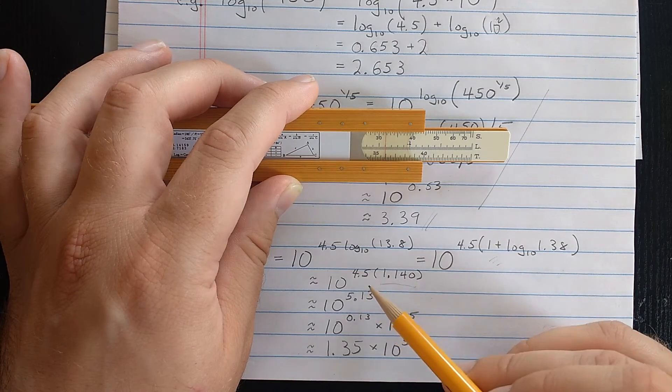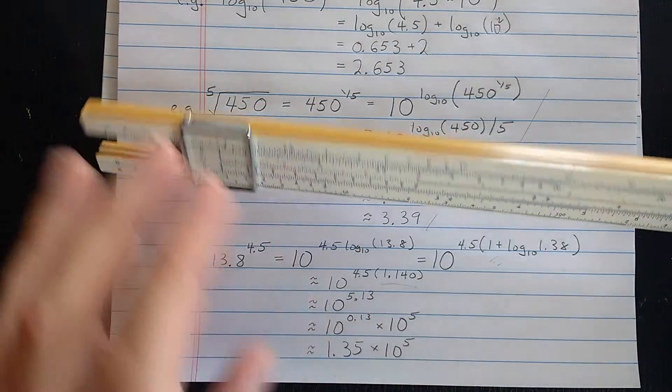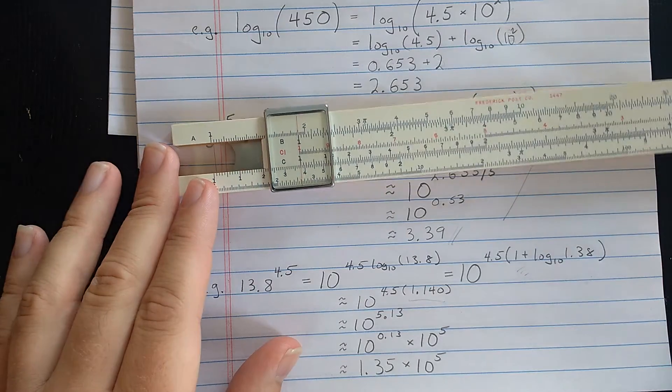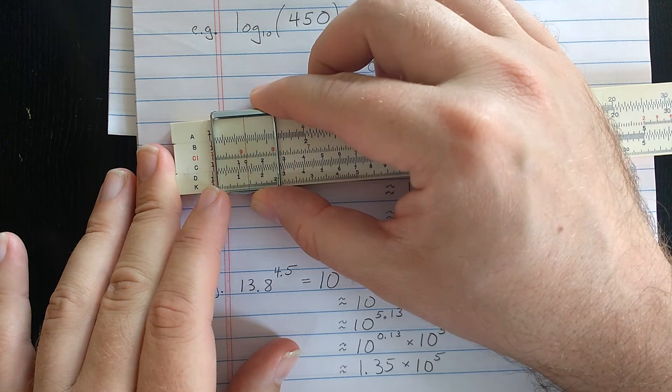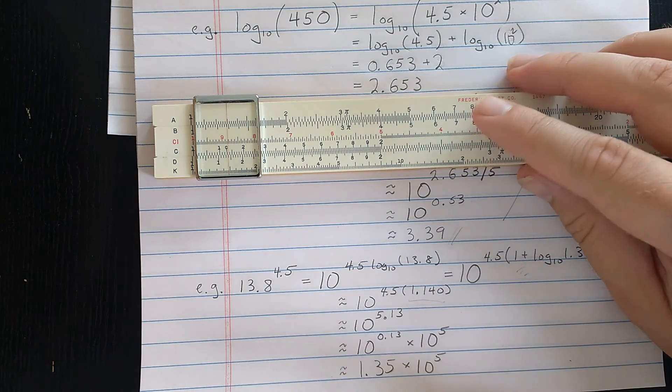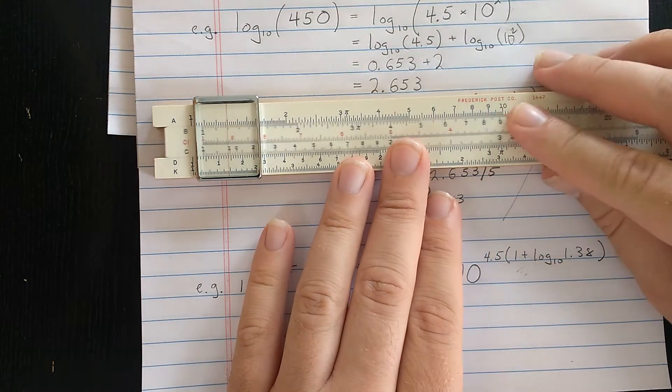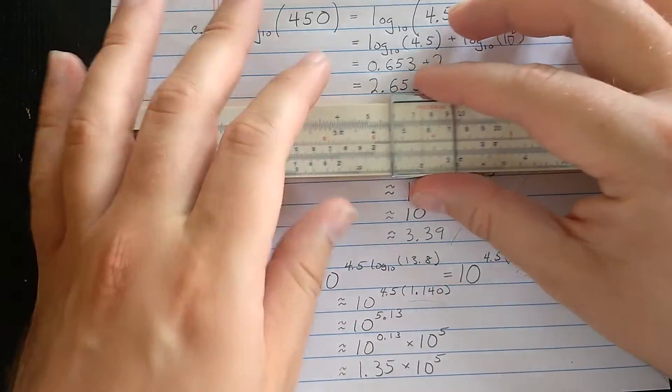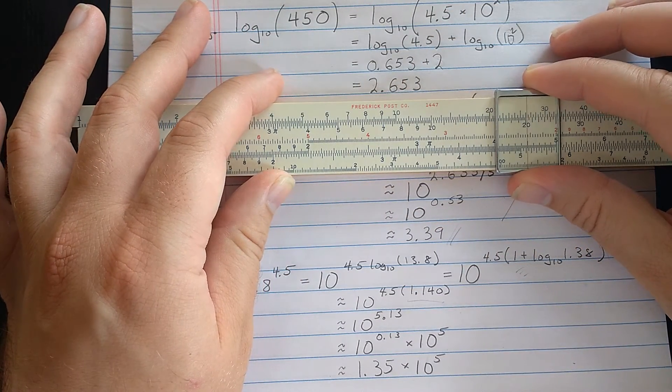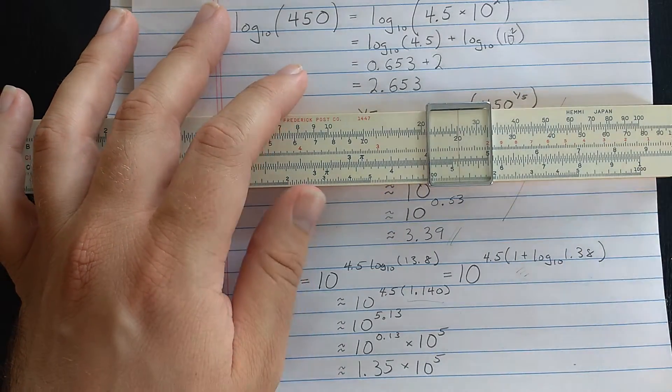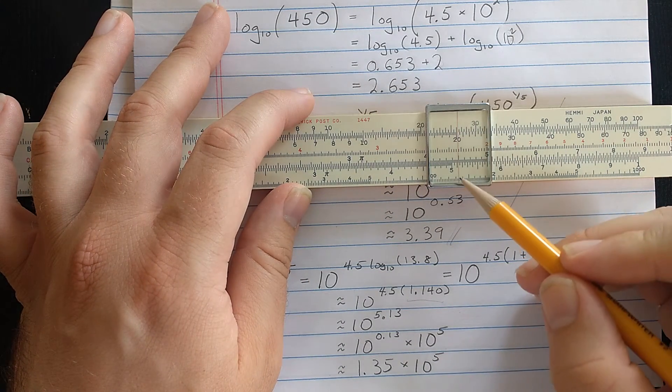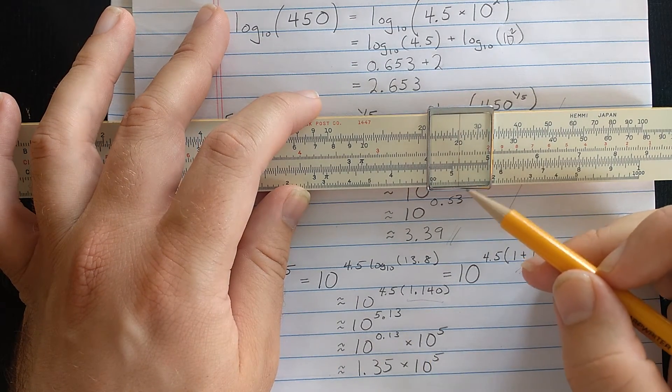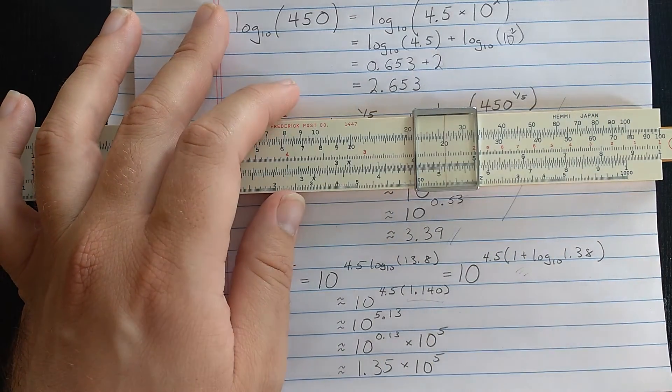Now I need to multiply that logarithm by 4.5. So let's see. I need 1.14. Let's see. 1.1. 1.14 is there. Let's multiply by 4.5. Let's just use regular multiplication. Reading result on the D scale. I get about 5, 1. And it's between 5, 1 and 5, 1, 5. I read before as 5, 1, 3. It's looking more like 5, 1, 2, 5 now. But let's go with 5, 1, 3.